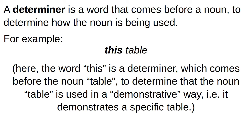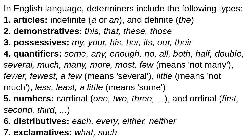Another example: 'this table.' Here, 'this' is the determiner. It comes before the noun 'table' and determines that the noun 'table' is used in a demonstrative way — that is, it demonstrates a specific table. Which table? This table. Let us see how many kinds of determiners there are.